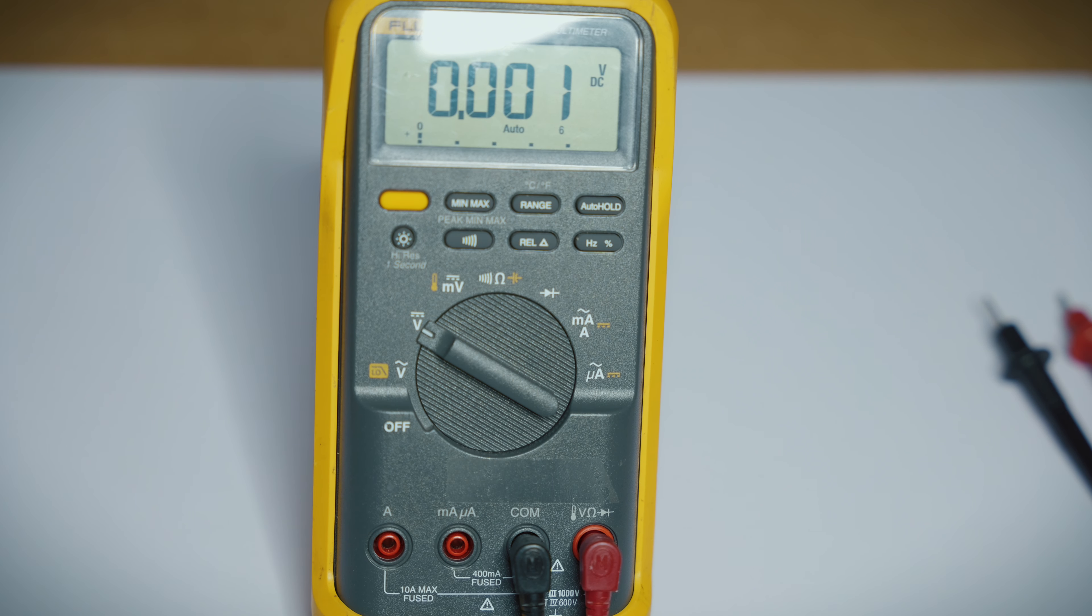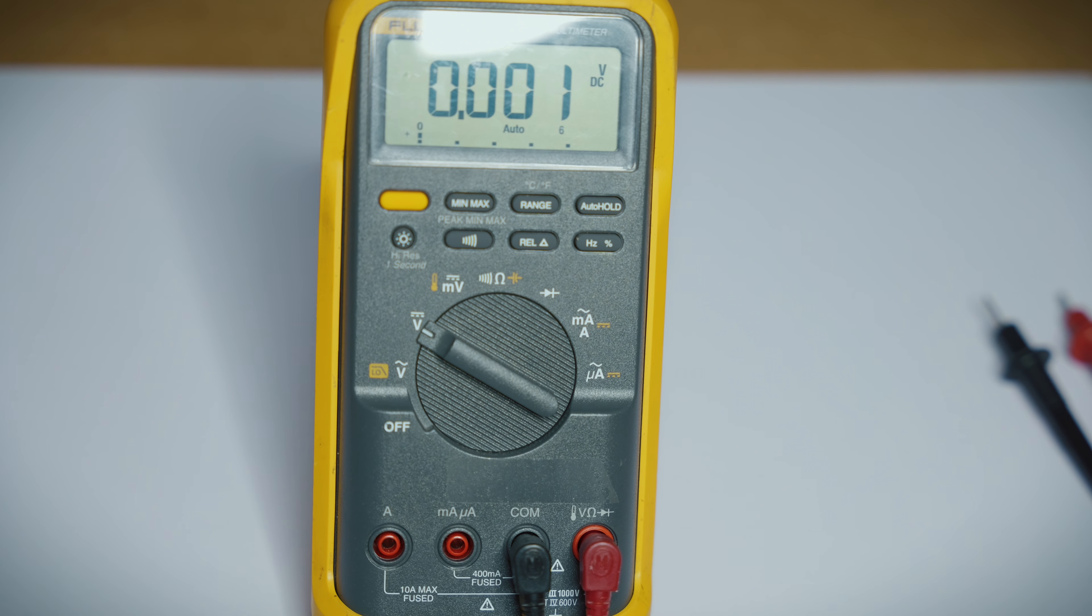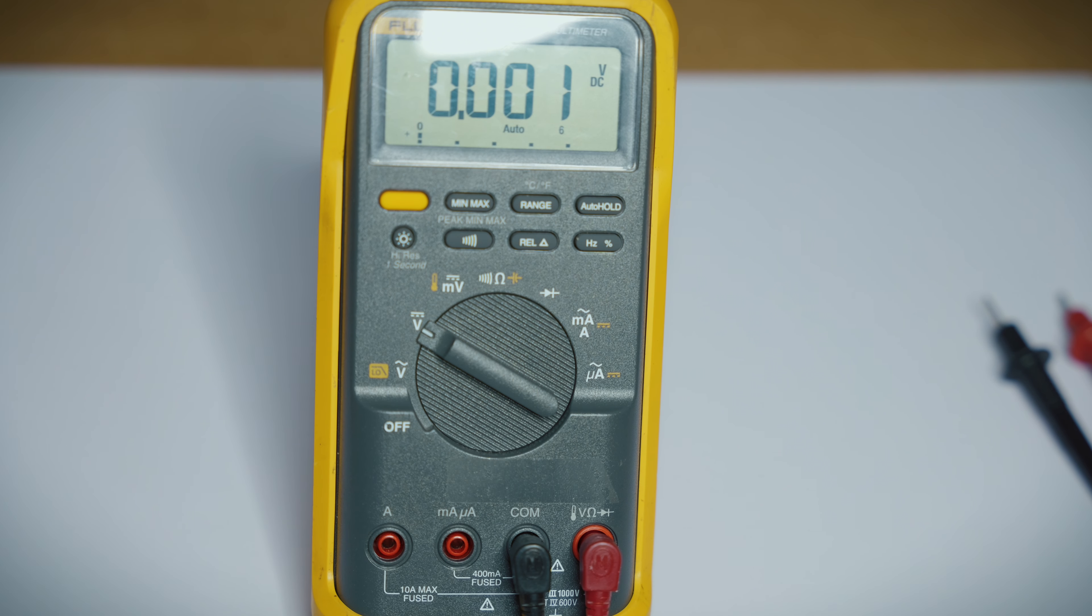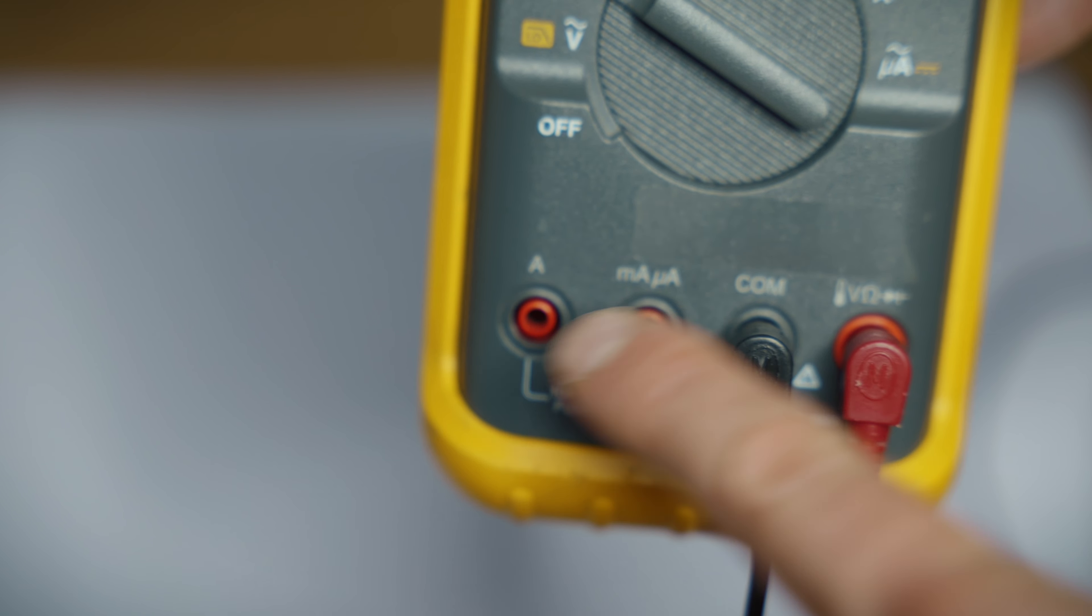The next setting we'll go to is the volts DC. Now the volts DC is represented by another capital V, but now it has a straight and dotted line over top. So a common use for the volts DC check, especially around your house, is going to be for checking various batteries. And on the battery, it shows you which side is negative and which side is positive. And this is true to most batteries. So when checking DC, your black probe is your negative and the red is the positive. And we're getting 8.71 volts on this 9 volt battery.